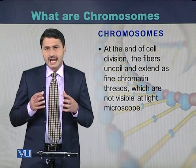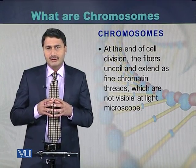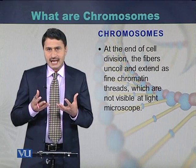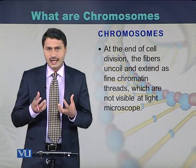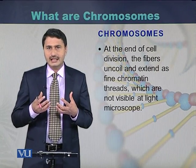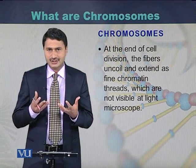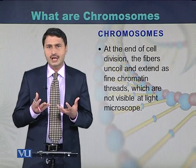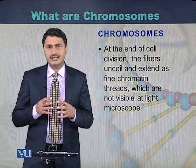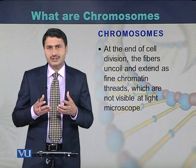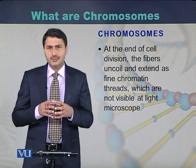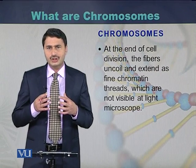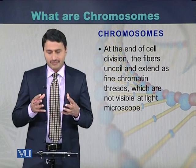During the beginning of cell division, we can see that chromosomes coil, thicken, and go into a specialized structure. But at the end of cell division, this process is reversed — chromosomes relax and come back into their original shape as chromatin fiber.